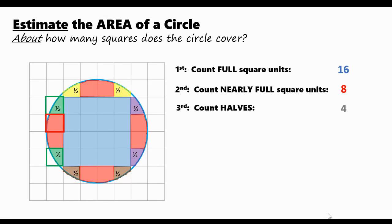Now it looks as though we've covered the entire circle. Let's take our estimates and put them all together. And you can see that adding these up, 16 plus eight plus four, we get about 28 square units.